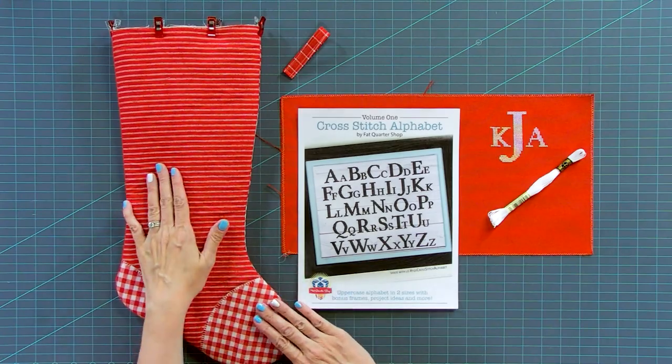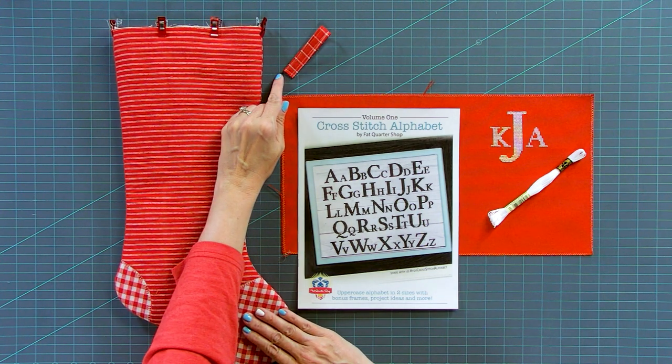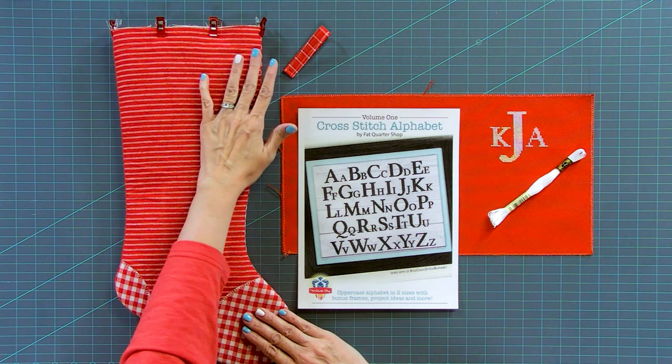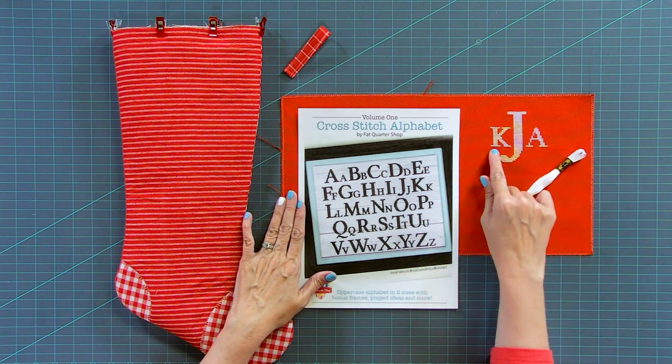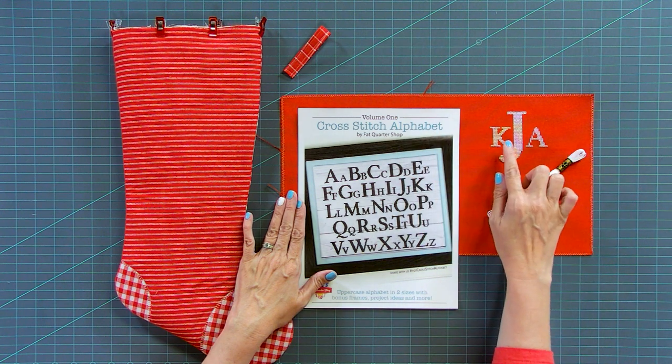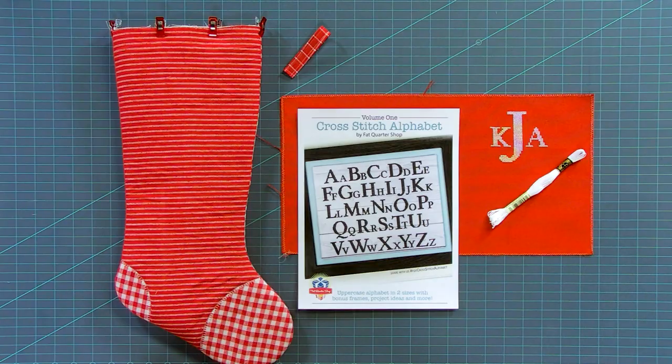Now we're starting with the stocking and the hanger that we made on steps one through eight on our quilting channel. So we've linked that video below. And then what we're gonna do is we're gonna cross-stitch some initials using the cross-stitch alphabet. And this is my initials, Kimberly and Jolly, and we're gonna talk through how we did that.